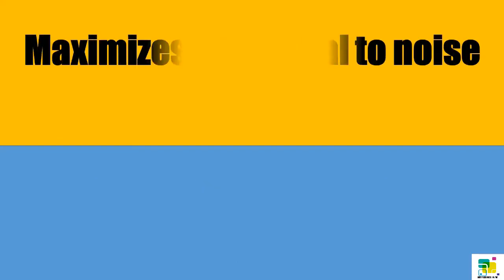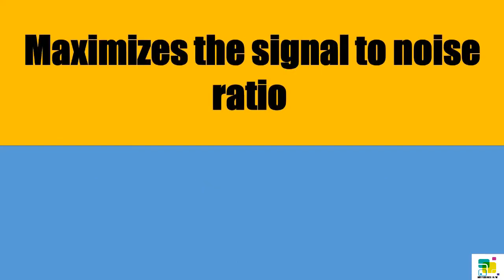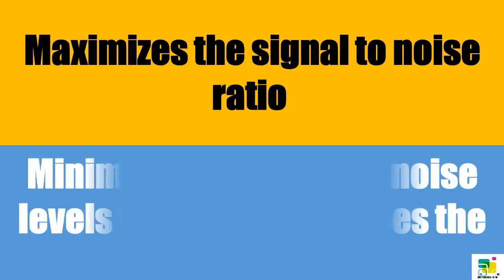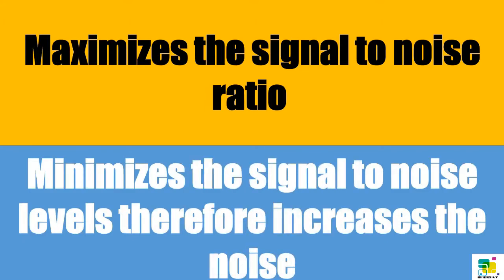A repeater maximizes the signal to noise ratio, but an amplifier minimizes the signal to noise levels, therefore increasing the noise.